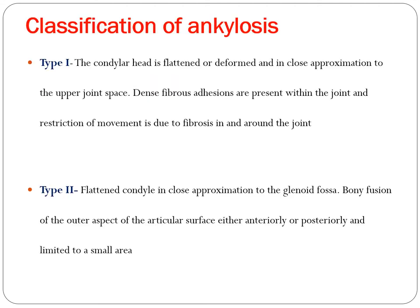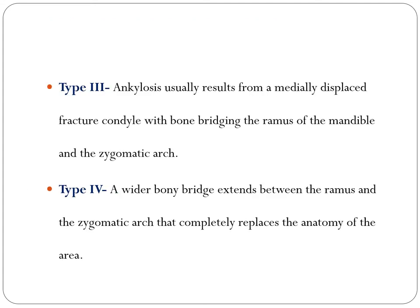Classification of ankylosis: Type 1 — condyle is flattened and deformed with close approximation of the joint space, dense fibrous tissue within the joint, and restricted movement due to fibers in and around the joint. Type 2 — flattened condyle with the coronoid process and bony fusion on the outer aspect. Type 3 — ankylosis from a medially displaced fracture segment fusing with the ramus. Type 4 — wide bony bridge between the ramus and segment that completely replaces the anatomy of the area.